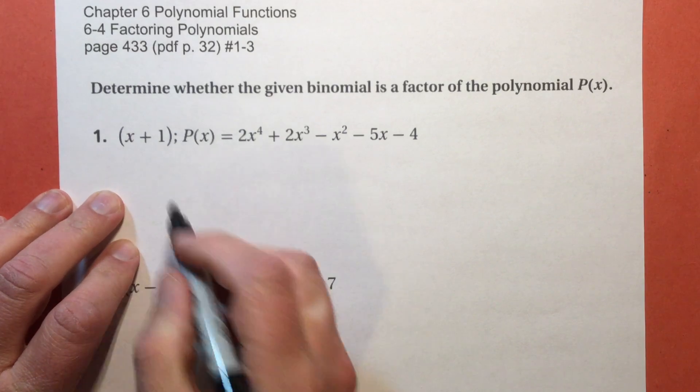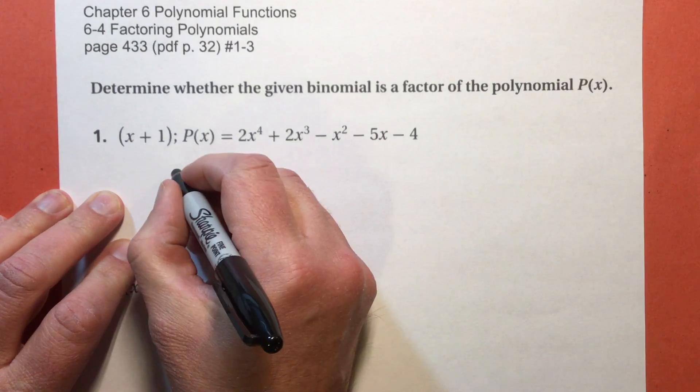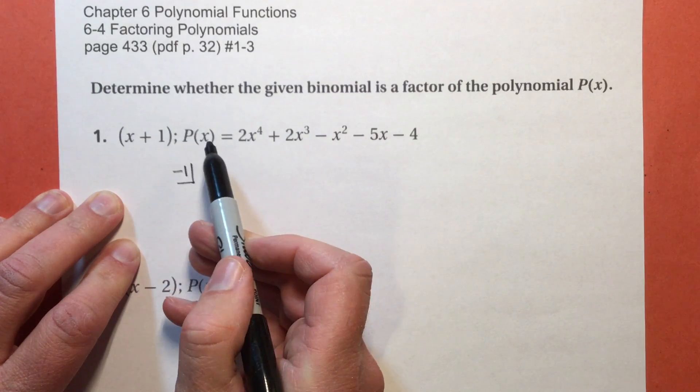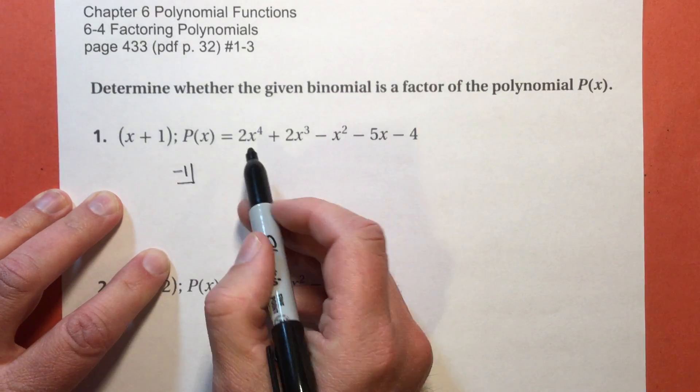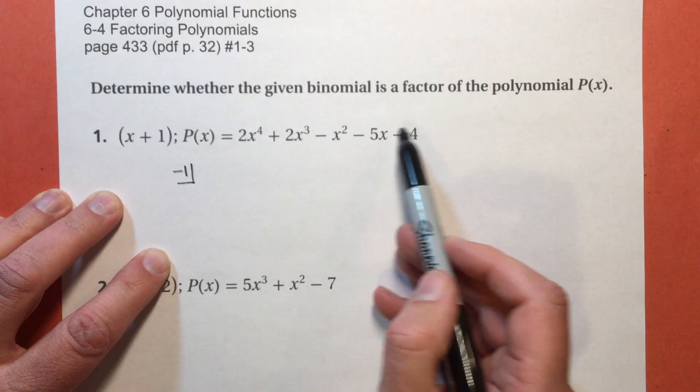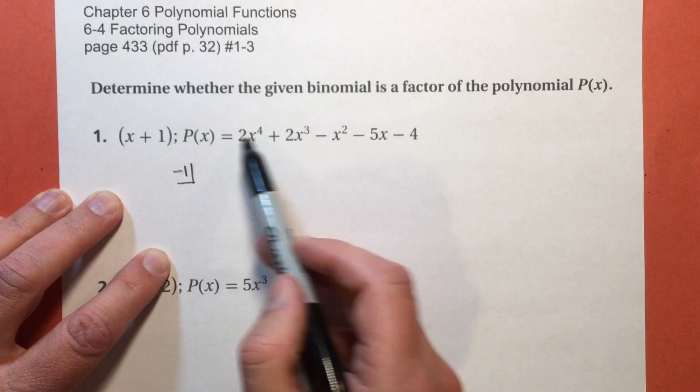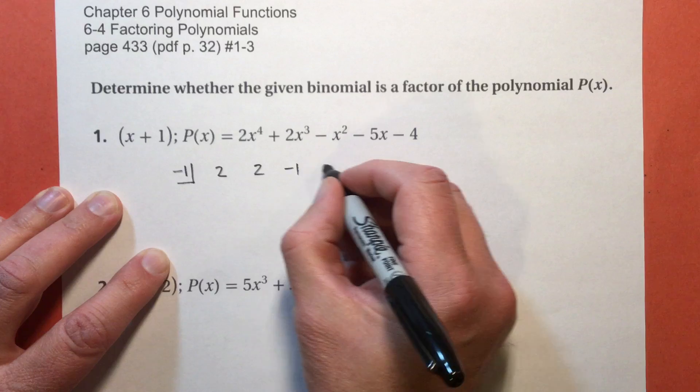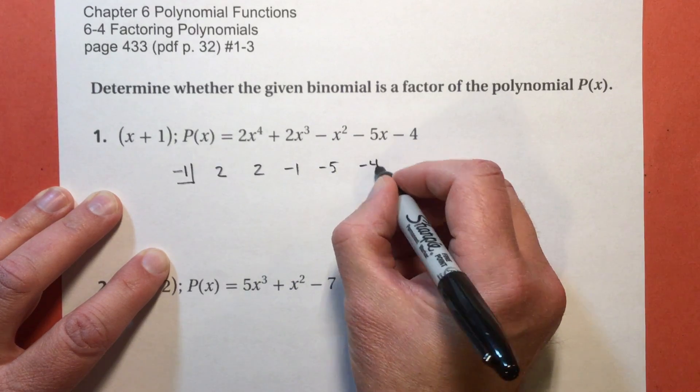So we're going to do synthetic division. I get x plus 1. That means I'm going to be using negative 1. Because remember, x plus 1 equals 0, so x equals negative 1. Is this set up the way I want it? 4, 3, 2, 1, 0. Yes, it's in order, and it's not missing any terms. So I have 2, 2, negative 1, negative 5, negative 4.